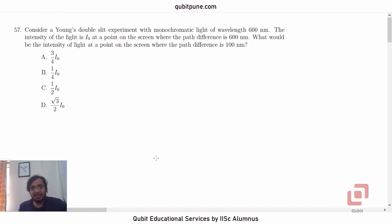Consider a Young's double slit experiment with monochromatic light of wavelength 600 nanometers. So let us write lambda equals 600 nanometers. The intensity of the light is I0 at a point on the screen where the path difference is 600 nanometers. Delta L is 600 into 10 raised to negative 9 meters. The intensity there is I0.